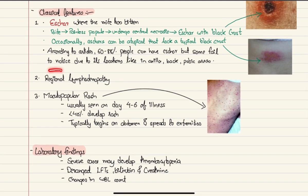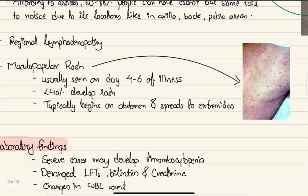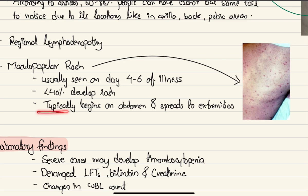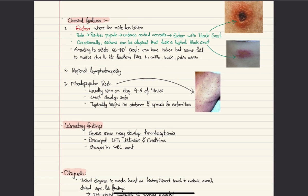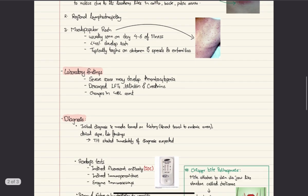Other classical features include regional lymphadenopathy with swollen lymph nodes, and maculopapular rashes as shown in the pictures. These rashes typically develop on day 4 to 6 of illness, occur in fewer than 40% of patients, and classically begin on the abdomen before spreading to the extremities.